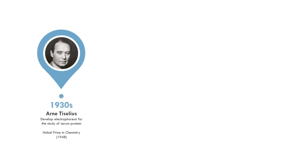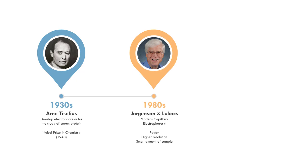Electrophoresis was first developed by the Swedish chemist, Arne Tiselius, in the 1930s for the studies of serum protein. He was later awarded the Nobel Prize in chemistry in 1948 for this work. Modern capillary electrophoresis was pretty new. It was developed by Jorgensen and Lucas in 1980s.